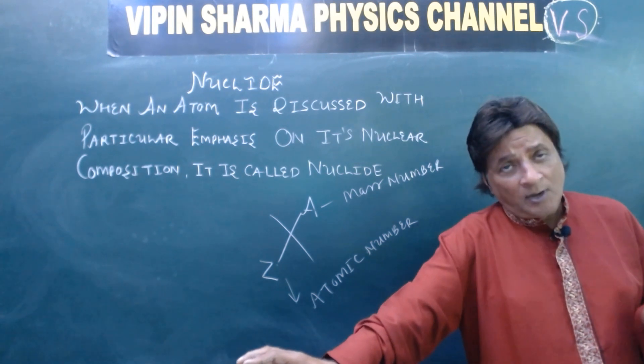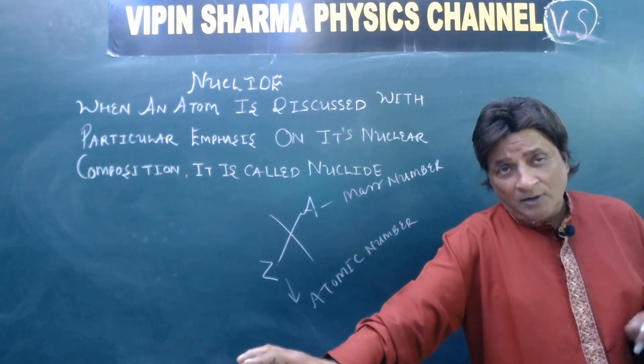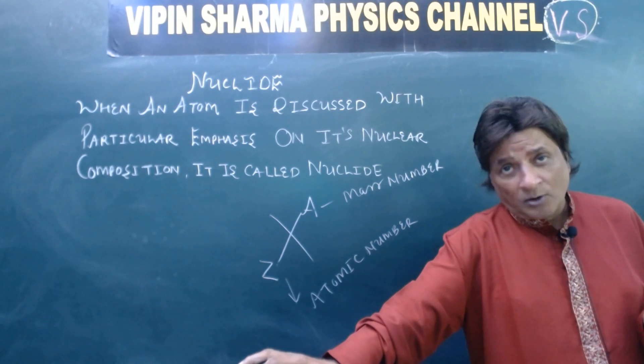So, what do we call the top number? Mass number. And what do we call the bottom number? Atomic number.